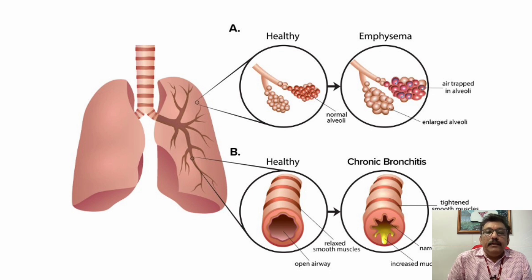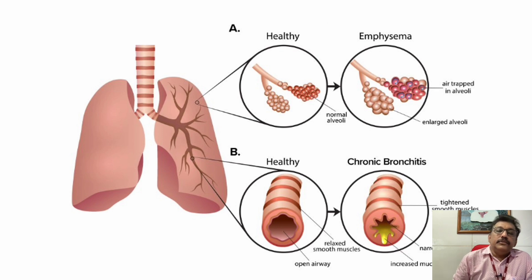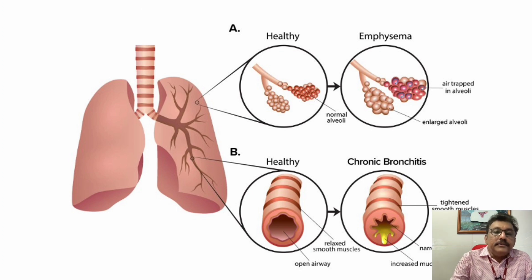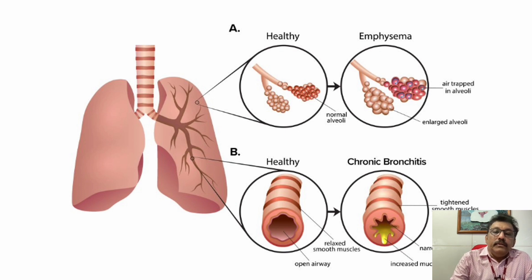Bronchitis predominantly involves inflamed airways with increased mucus secretion, whereas emphysema involves dilatation and destruction of alveoli. Although clinical findings can overlap, chronic bronchitis is predominantly a cough disease, while emphysema is predominantly a breathlessness disease.